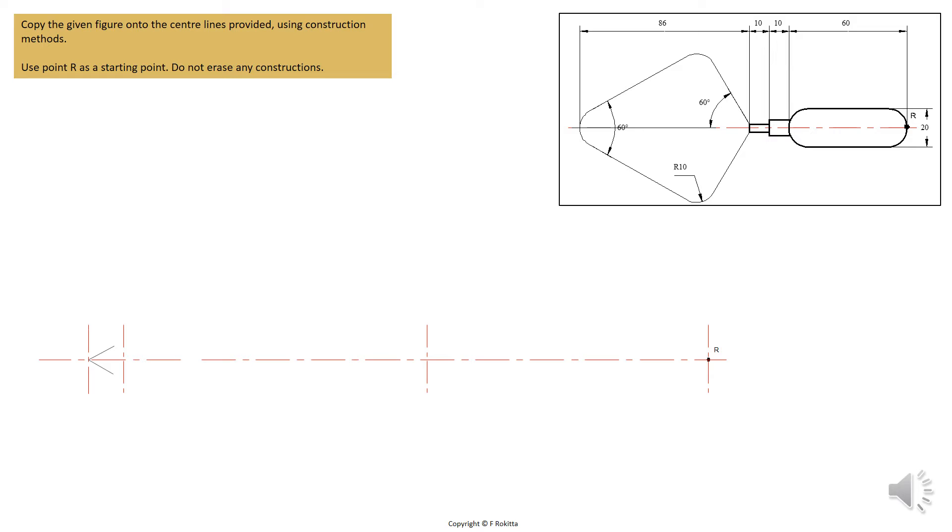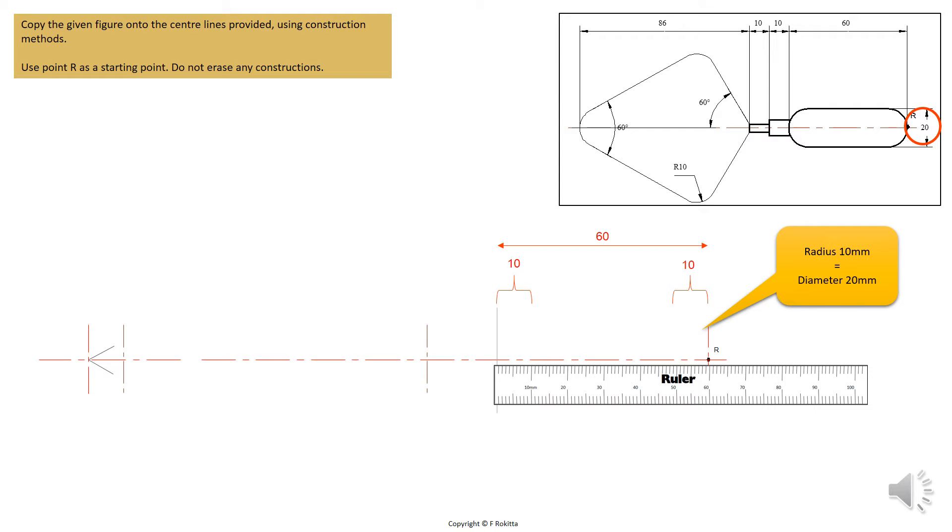We will start this drawing by placing our ruler at point R, which is the reference point of the start, and we will measure the 60 mm as indicated on the schematic. Also, we will add the radius of 10 mm, which is the radius of the circles at the front and back end of the handle as you can see on the schematic.